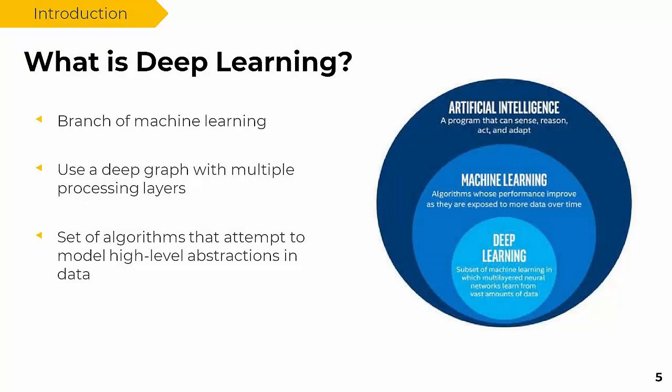So what is deep learning? Deep learning is a branch of machine learning that uses a deep graph with multiple processing layers and a set of algorithms that attempt to model high-level abstractions in data. As you can see, deep learning is a branch of machine learning, and both fall under the big umbrella of artificial intelligence.